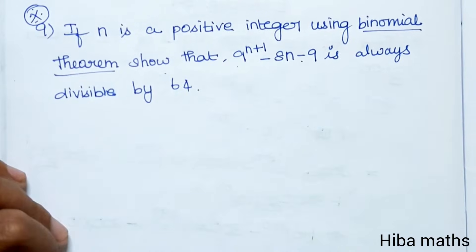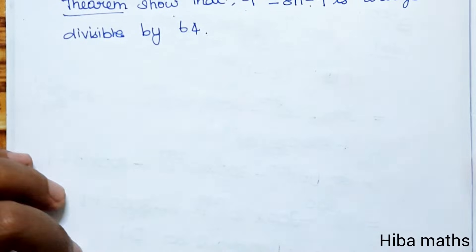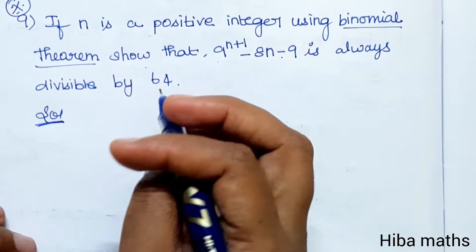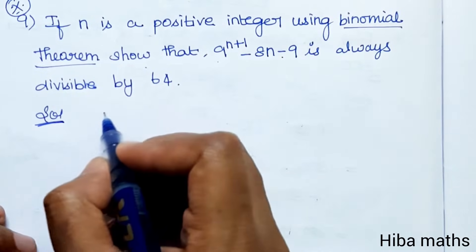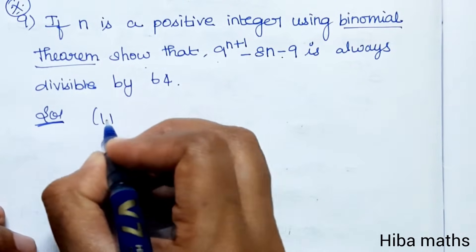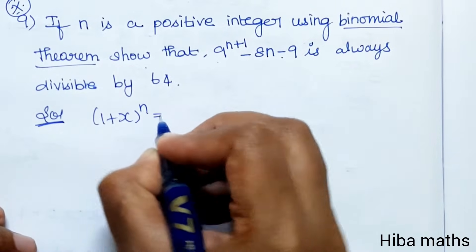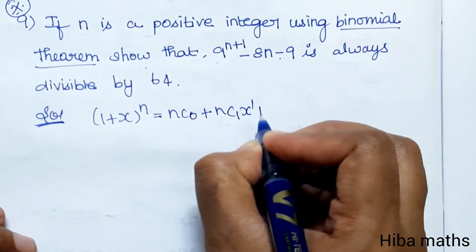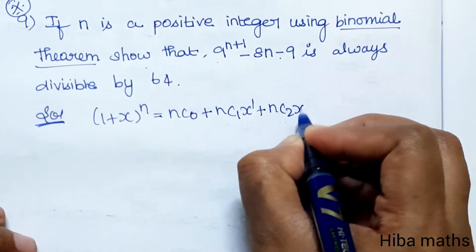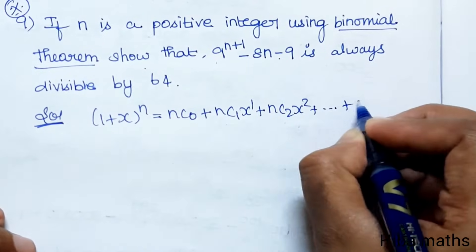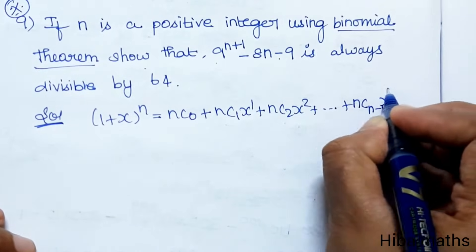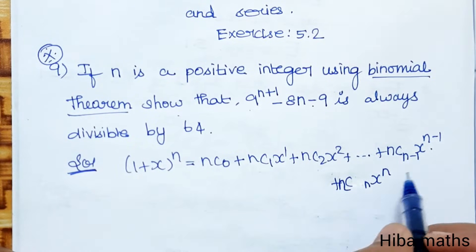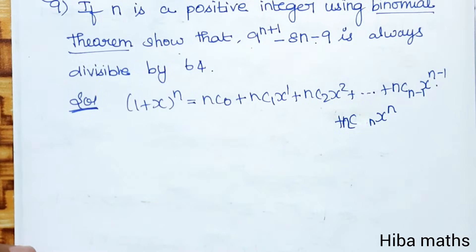We can use the binomial theorem in this question. The binomial theorem formula: 1 plus x, whole power n, is equal to nC0 plus nC1 x power 1 plus nC2 x power 2, up to nC(n-1) x power n minus 1 plus nCn x power n.